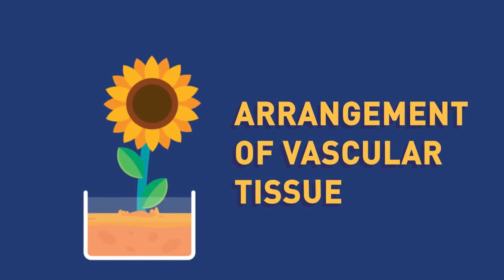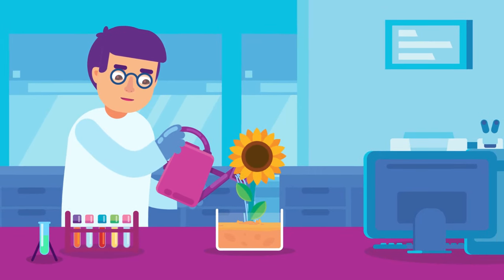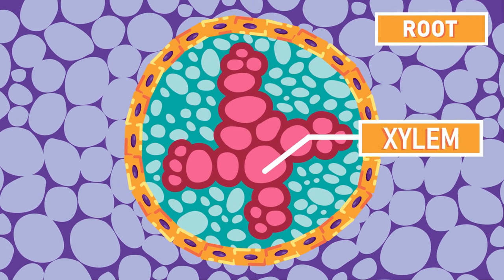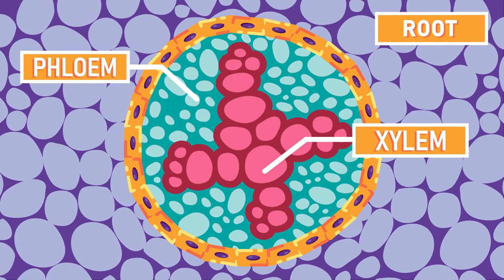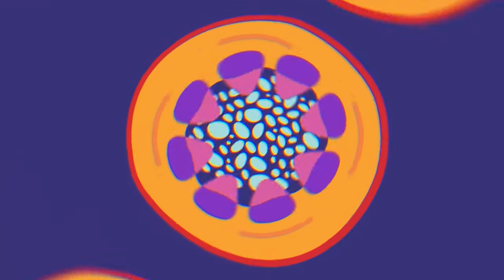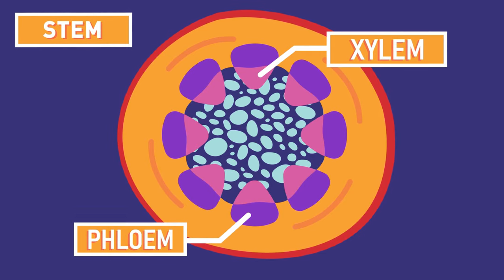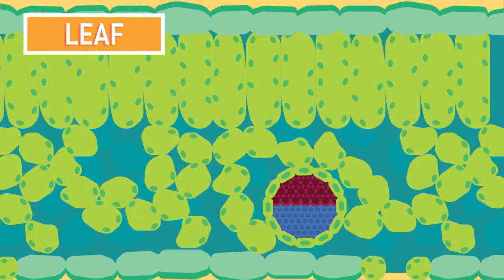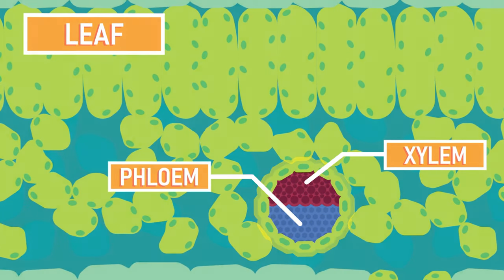Arrangement of vascular tissue. The vascular tissue has different arrangements in various parts of the plant. In the roots of herbaceous dicot plants, the xylem forms an X shape in the middle, while phloem fills around the xylem. The xylem and phloem in the stem are clustered into circular shapes, located near the edge of the stem. While in the leaf, the xylem and phloem are located in the vascular bundle, with the xylem positioned above the phloem.